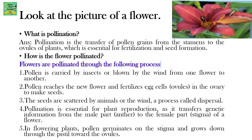How is the flower pollinated? Flowers are pollinated through the following processes. Pollen is carried by insects or blown by the wind from one flower to another. Pollen reaches the new flower and fertilizes the egg cells present in the ovules in the ovary to make seeds. These seeds are scattered by animals or wind by the process called dispersal. Pollination transfers the genetic information from the male part — the anther — to the female part — the stigma — of a flower. In flowering plants, pollen germinates on the stigma and grows down through the pistil towards the ovules.